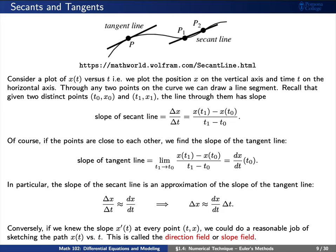As one point gets very close to the other, then this actually becomes a tangent line. And so the idea is that we can really approximate our tangent lines by using these secant lines.